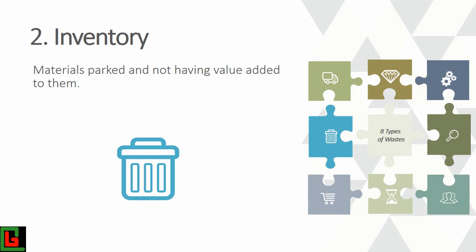The second type of waste is inventory — material which is parked with no value being added to it. Inventory includes recently received material, material in transit from the supplier, material stored before processing begins, and work-in-process material while machining or processing is ongoing.